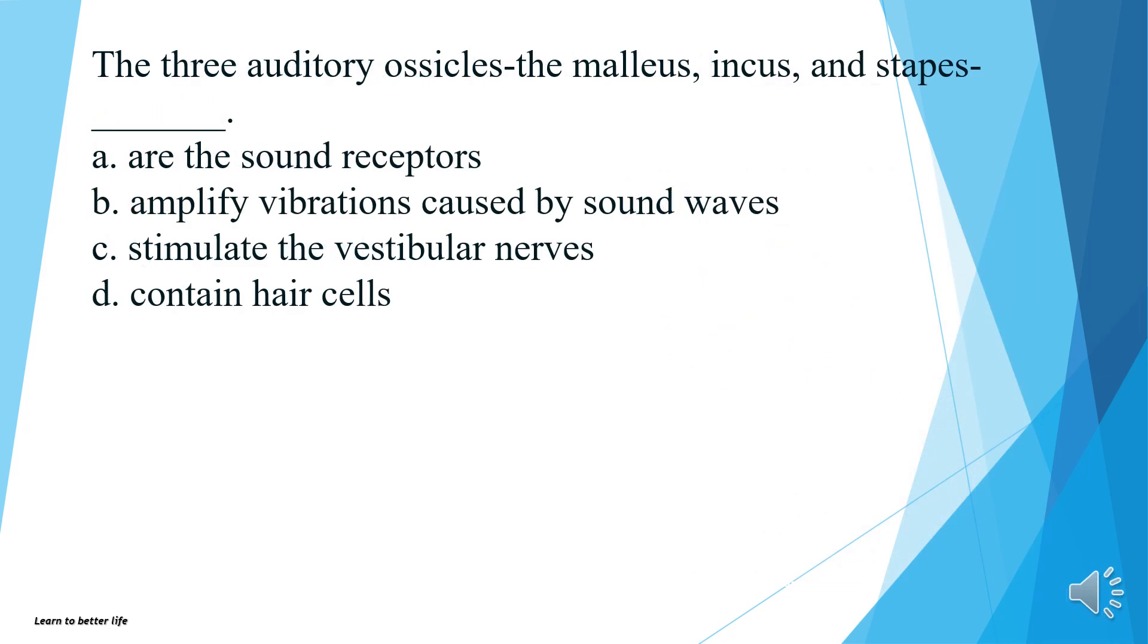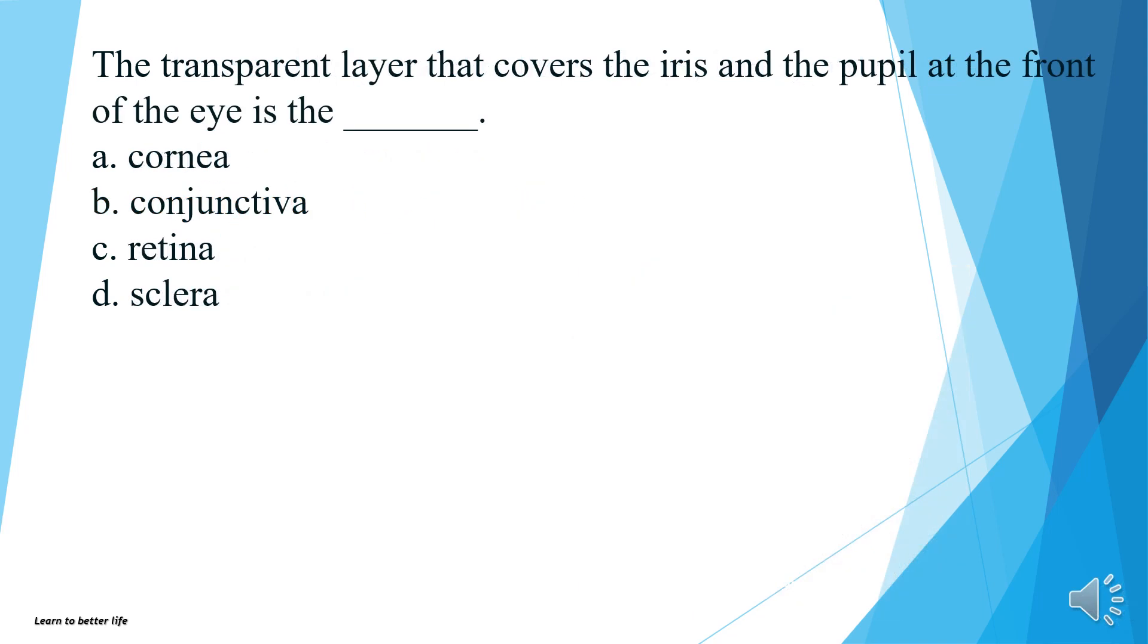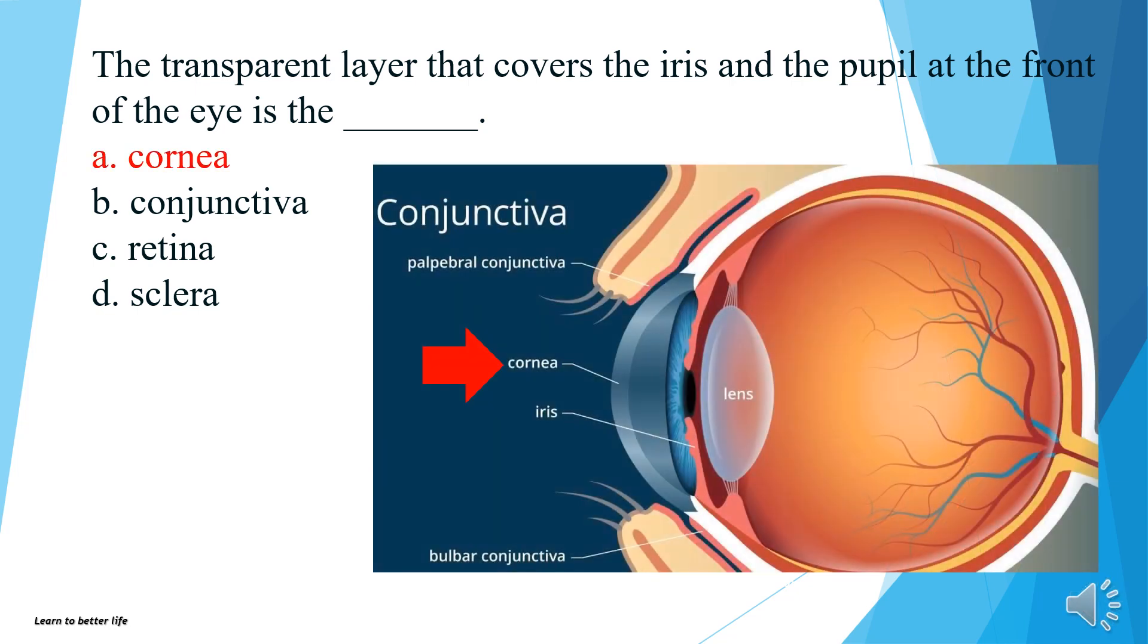The three auditory ossicles, the malleus, incus, and stapes, are the sound receptors, amplify vibrations caused by sound waves, stimulate the vestibular nerves, or contain hair cells? The answer is B, amplify vibrations caused by sound waves. The transparent layer that covers the iris and the pupil at the front of the eye is the cornea, conjunctiva, retina, or sclera? The answer is A, cornea.